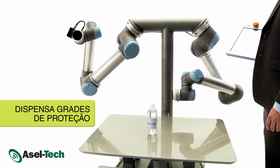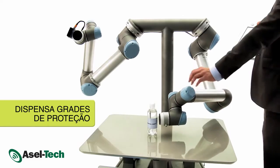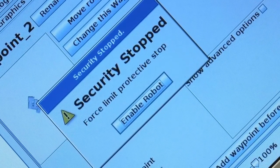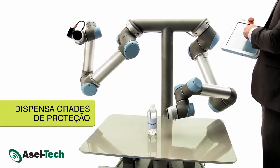Employees can work right alongside the robot. If a person comes into contact with the robot arm, it automatically stops operating, ensuring worker safety.